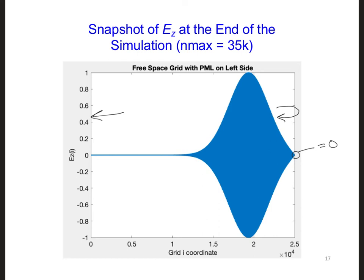Do we need to care about this reflection while we test the PML? Especially since we're comparing the EZ field 10 cells to the left of the source with the EZ component 10 cells to the right of the source?